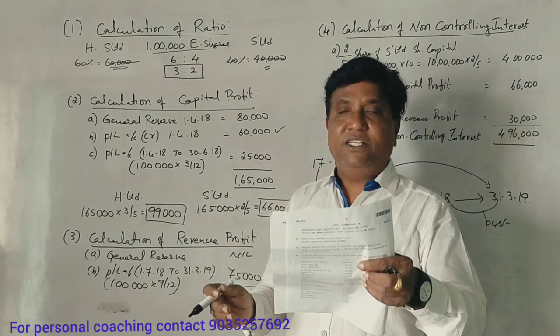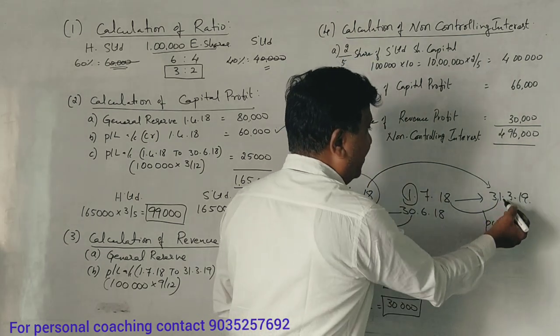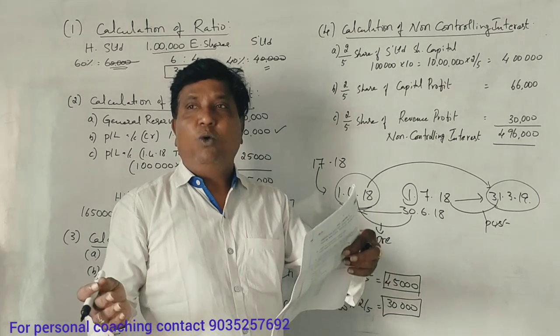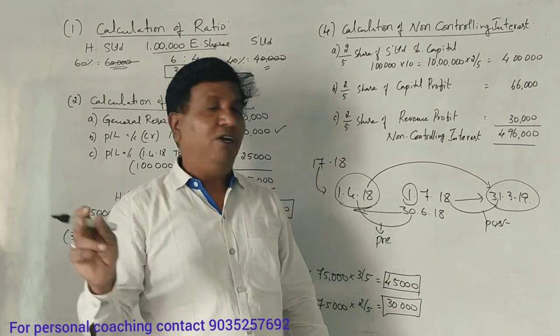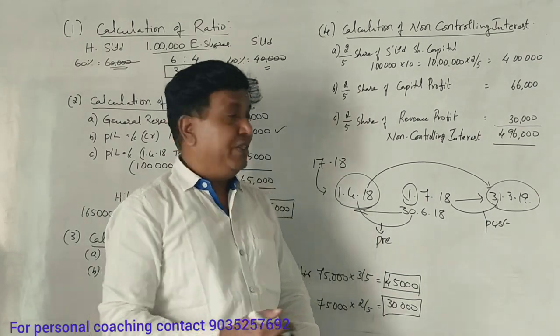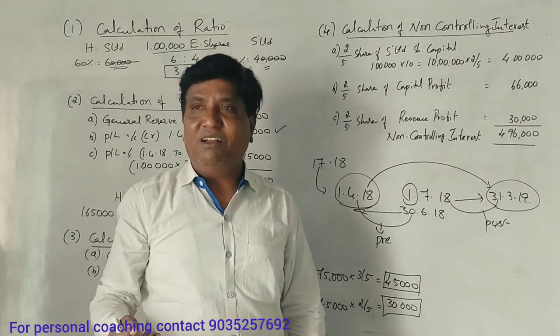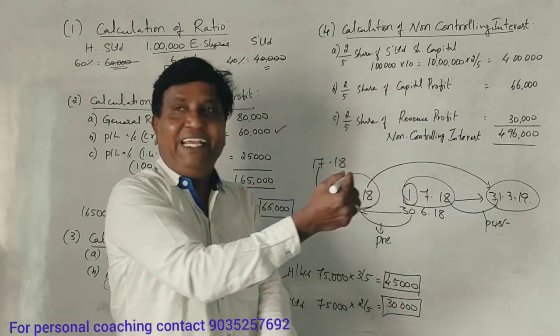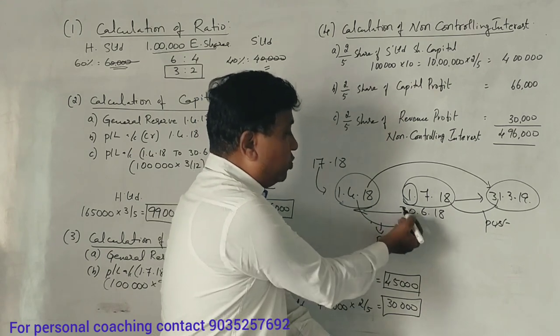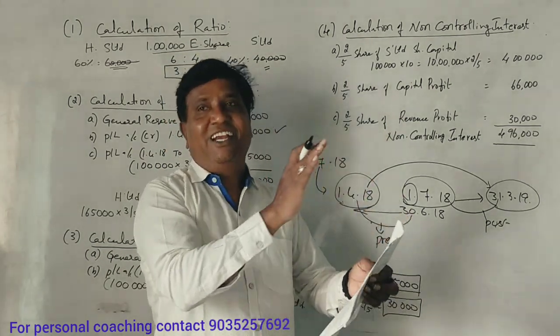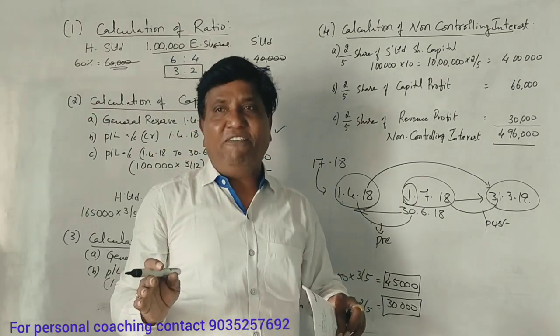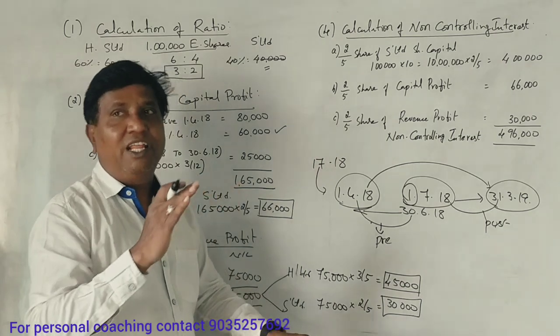Net profit for the year ended 31st March 2019. The profit that is earned during this year, we will divide it. April May June 3 months, and the purchase of the company is end of July. July to March 19, the 9 months post-acquisition. The profit in the 3 months is capital profit.